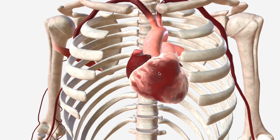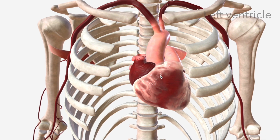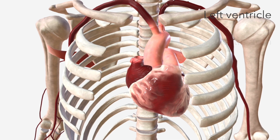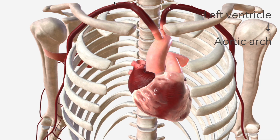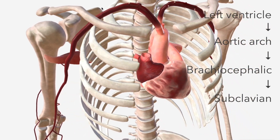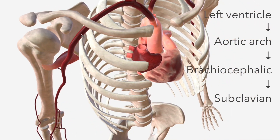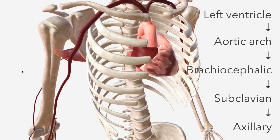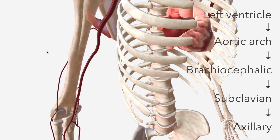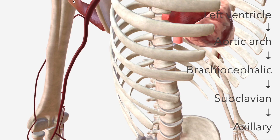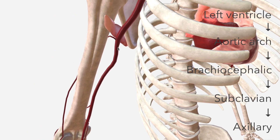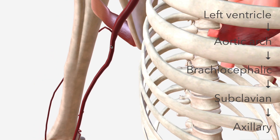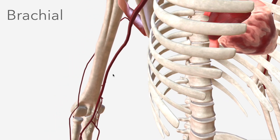Looking at the departure point for arterial blood, which is the left ventricle, into the ascending aorta, which shortly becomes the arch of the aorta. To the right, we have the brachiocephalic trunk departing, which very quickly becomes the subclavian artery. At the lateral border of the first rib, that becomes known as the axillary artery, which continues into the axilla, anterior to the teres major muscle. As it transmits past the teres major, it becomes known as the brachial artery.